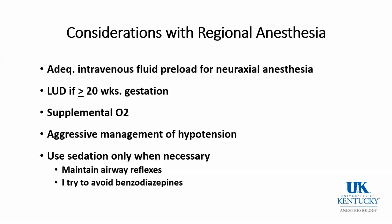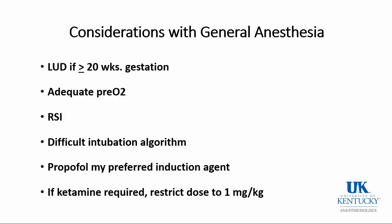For general anesthesia: apply left uterine displacement, ensure the patient is adequately pre-oxygenated, and perform a rapid sequence induction — just as for a cesarean delivery. Be aware of the higher risk of difficult intubation and have your equipment and algorithm ready. Propofol is generally my preferred induction agent. For an unstable patient needing hemodynamic stability, I'll use etomidate. If ketamine is needed, restrict the dose to one milligram per kilo or less because of the risk of increased uterine tone.